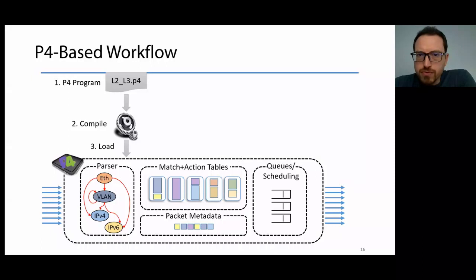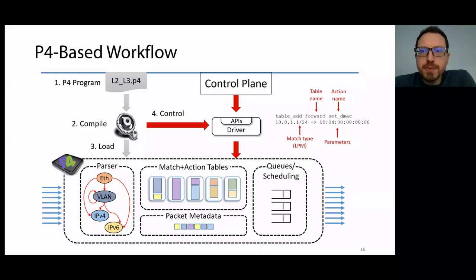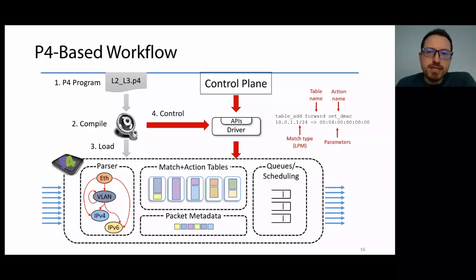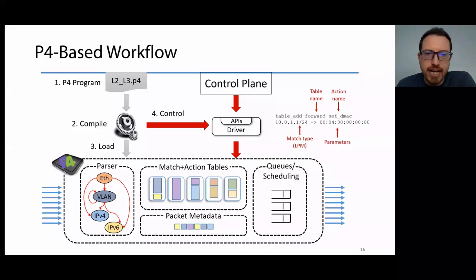Once the program is compiled, it can run on the switch, and the hardware resources are allocated to provide the functionalities described in the P4 program. At runtime, the control plane can configure match-action tables — table entries define what actions should be performed on matching packets, and it's up to the control plane to add and remove these entries. For example, one entry could say that packets with destination IP addresses in a certain subnet should have the destination MAC address changed to a specific value.